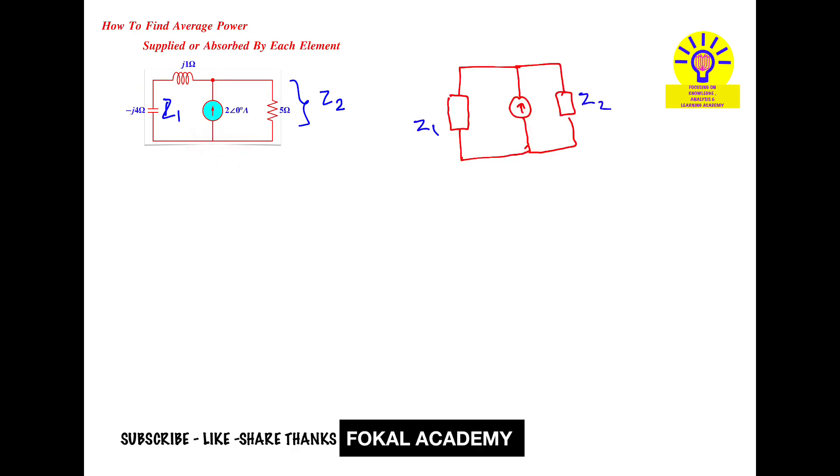Now redraw the circuit like this. This is impedance Z1 and this is impedance Z2. Here Z1 and Z2 are parallel. You can redraw the circuit like this with the current source. I'm keeping the three branches in parallel, so simply I keep it in first place.